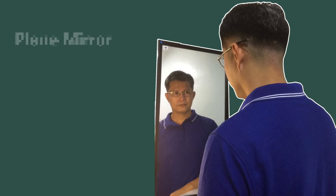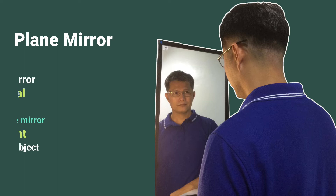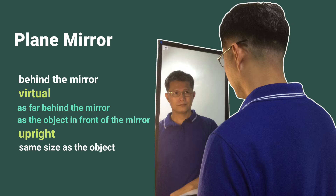How would you describe the image formed in a plane mirror? This type of mirror always forms an image of an object that appears behind the plane at which the mirror lies. So we call this image a virtual image. The image is as far behind the mirror as the object is in front of the mirror, upright, and has the same size as the object.